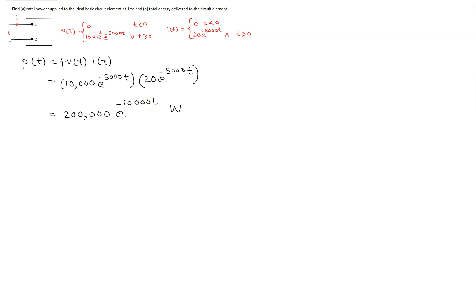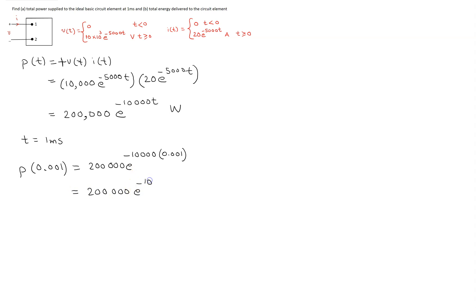To find the power at time 1 millisecond, we substitute t equal to 1 millisecond into the expression 200,000 e raised to the power minus 10,000t. This gives 200,000 e raised to the power minus 10. Since e raised to the power minus 10 is 45.4 times 10 raised to the power minus 6, this evaluates to 9.08 watts.